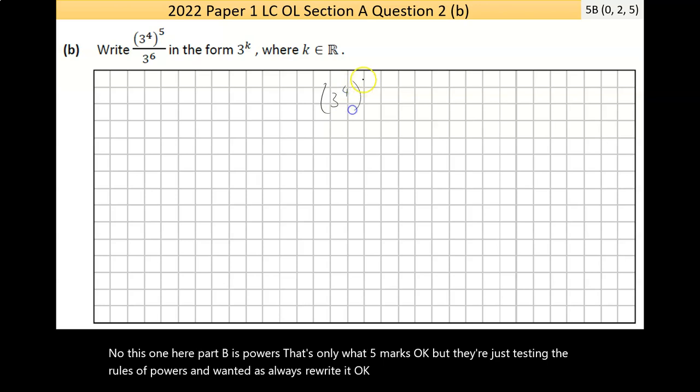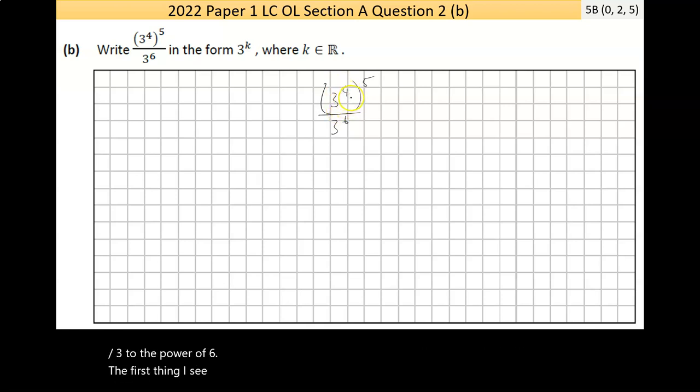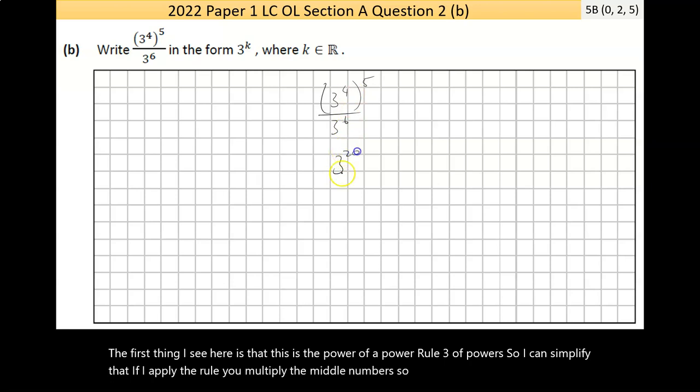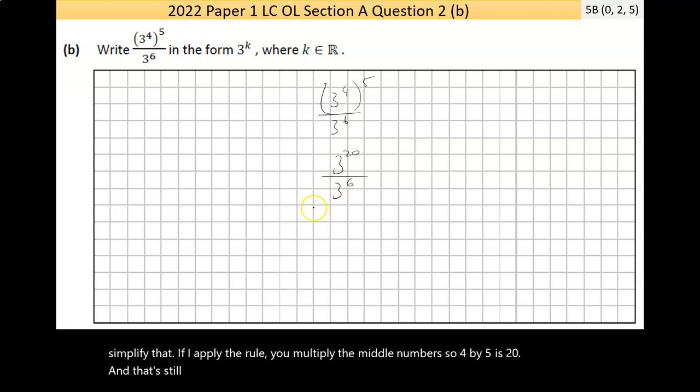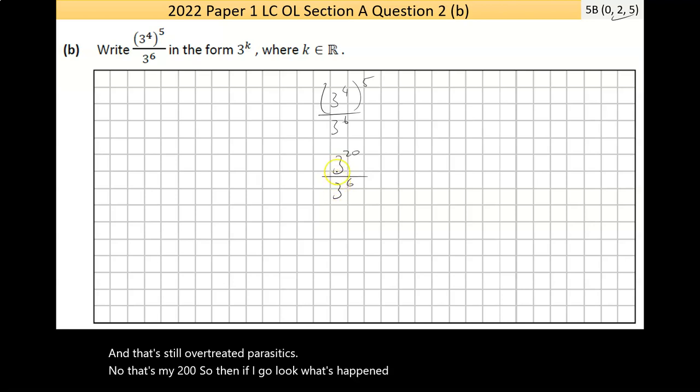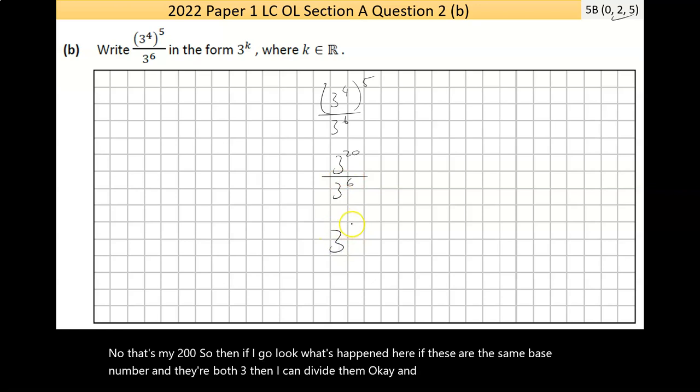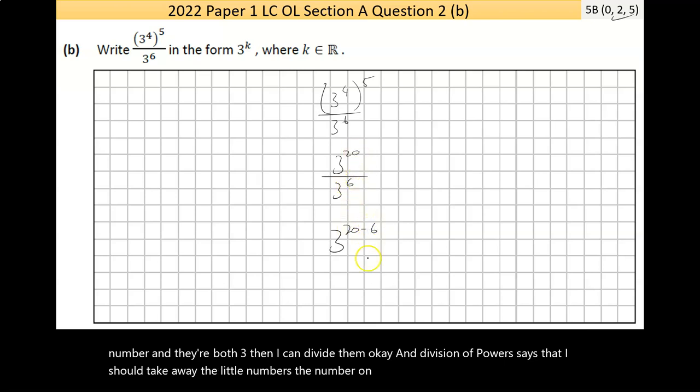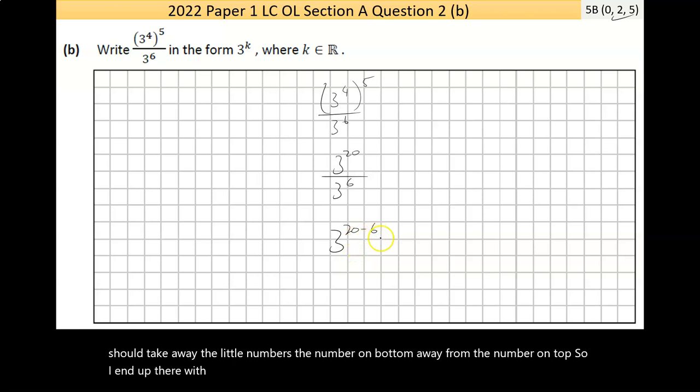So 3 to the power of 4 to the power of 5 over 3 to the power of 6. Now, the first thing I see here is that this is the power of a power, rule 3 of powers. So I can simplify that. If I apply the rule, you multiply the little numbers. So 4 by 5 is 20. And that's still over 3 to the power of 6. So then if I go, well, what's happening here? If these are the same base number, and they're both 3, then I can divide them. And division of powers says that I should take away the little numbers. The number on bottom away from the number on top. So I end up there with 3 to the power of 20 minus 6, which is the same thing as 3 to the power of 14.